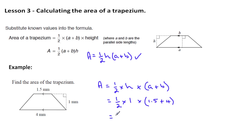If you work this out, you'll find that the area is equal to 2.75, and remember our units are squared, so it's millimetres squared.